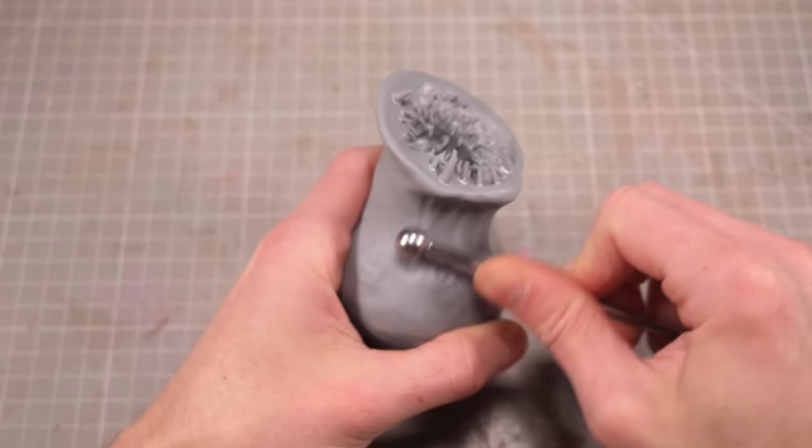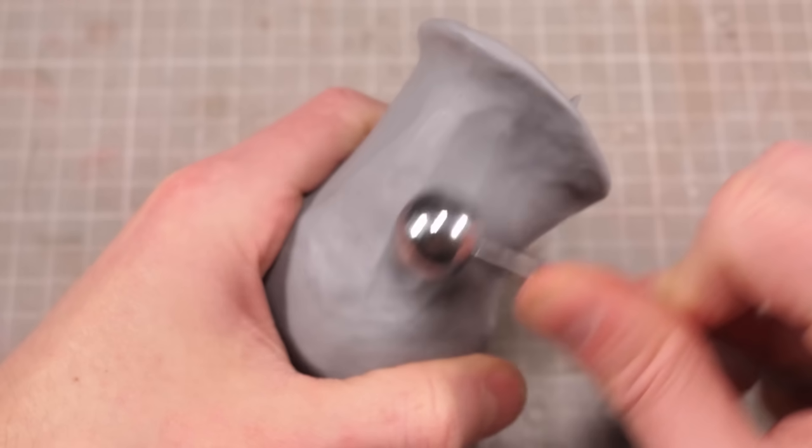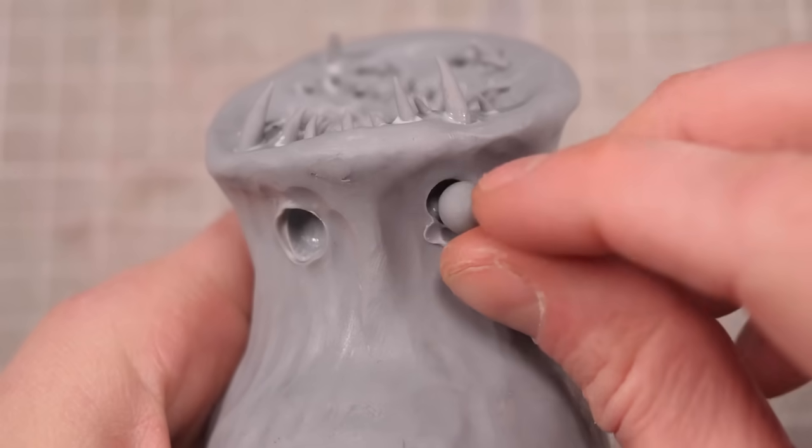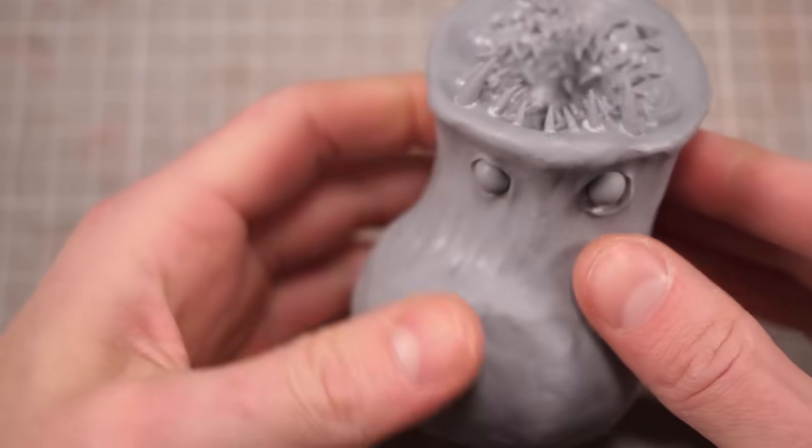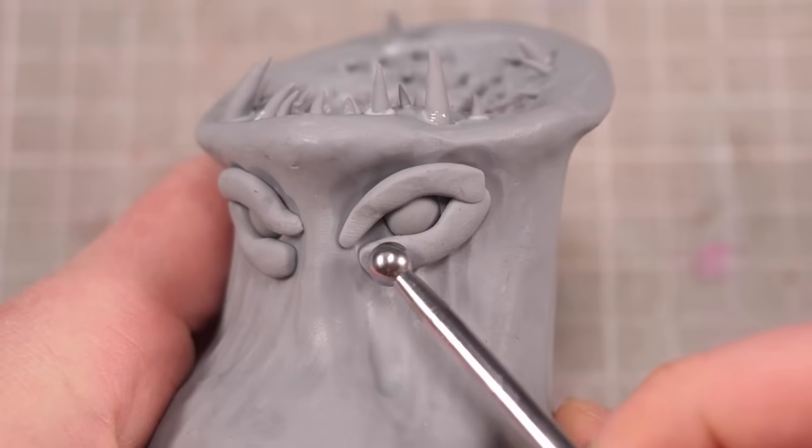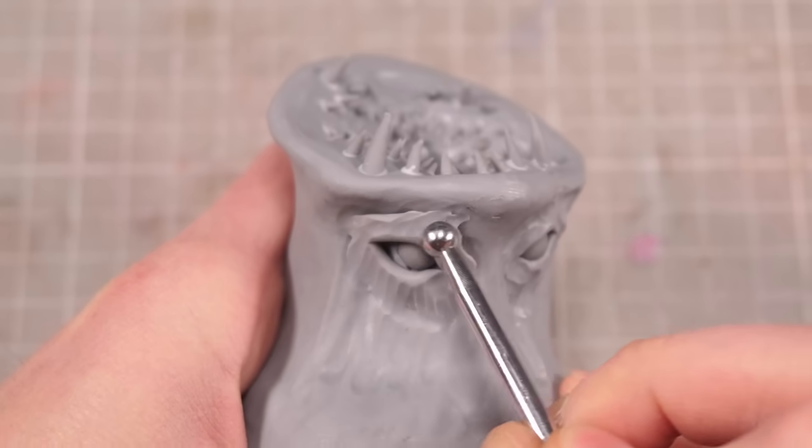Once the teeth are in place I can give the whole body a little pre-texture texturing then stab some holes for a pair of little peepers.